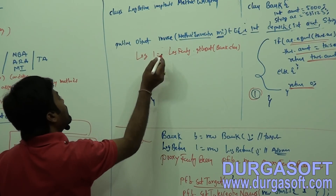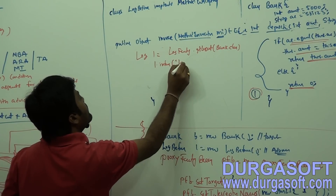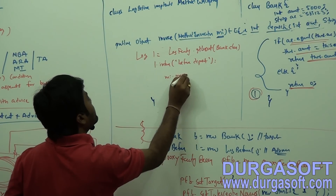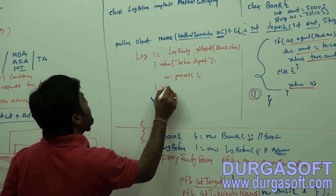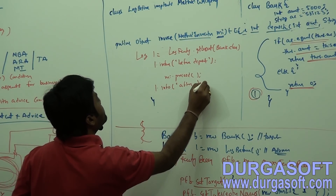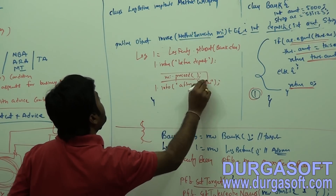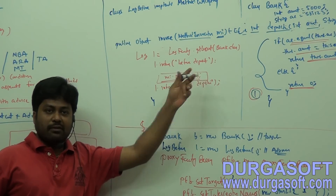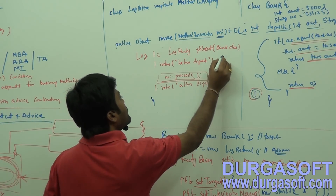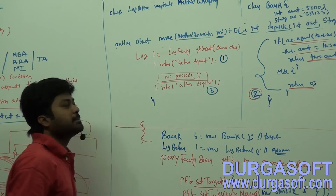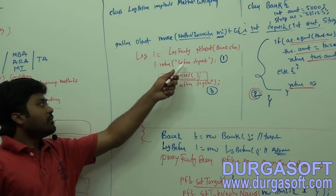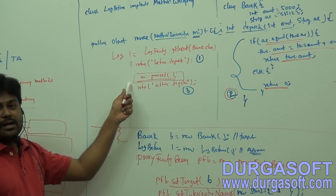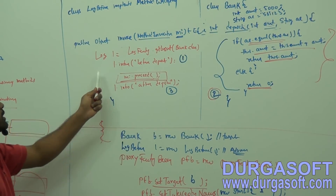It will return a log object. Call log.info('before deposit'), then call mi.proceed(). After that write 'after deposit'. The proceed method - code before proceed executes before your deposit, and code after proceed executes after your deposit. While execution, it will execute the before code first, then execute the business method via proceed, and the return value - an integer - comes back as an Object.